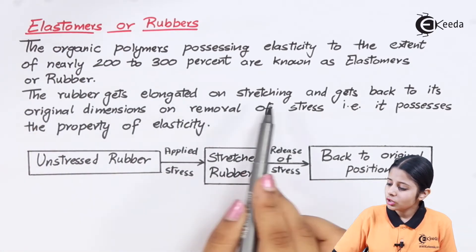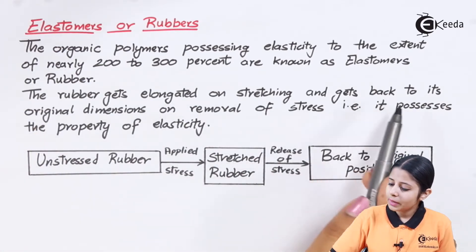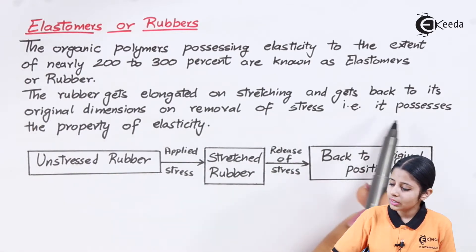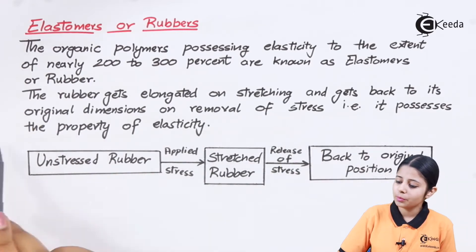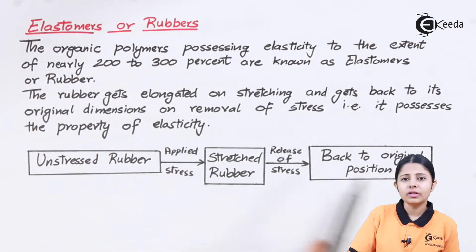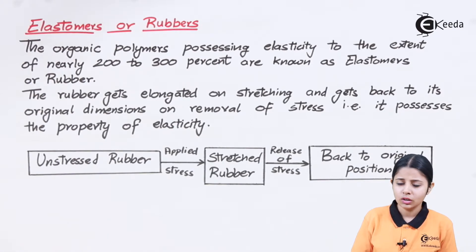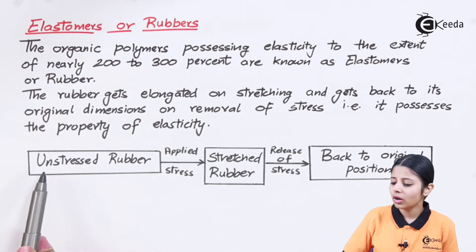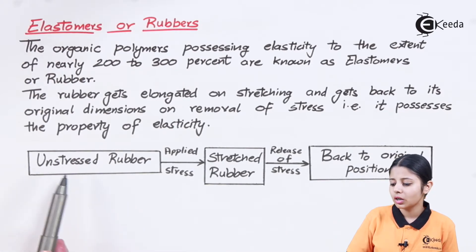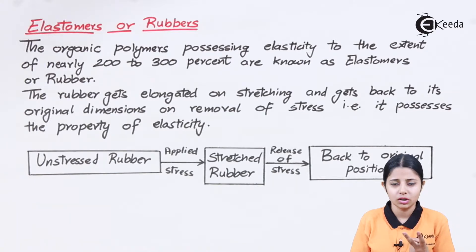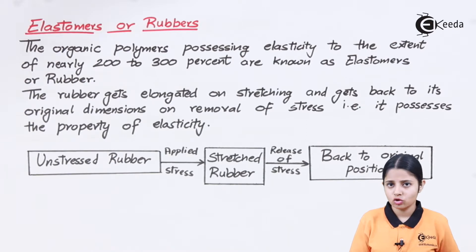The rubber gets elongated on stretching and gets back to its original dimensions on removal of stress — that is, it possesses the property of elasticity. A diagrammatic representation of elasticity is given here. The unstressed rubber represents the original form of rubber — the original shape and size.